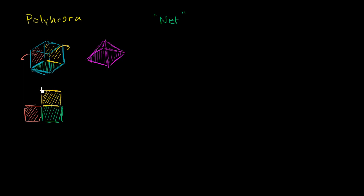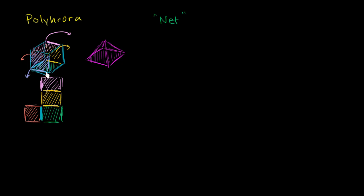Just to be clear, this edge right over here is this edge right over there. Now I have to worry about the top part of the cube — let me do it in a pink color. This top part of the cube is pink and it needs to be attached to one of these sides. Let's attach it to that yellow side, so that when we fold it out — we fold that yellow part back, then we're folding this part back — it would be right over there. And then we could fold this front face out along this edge, and it would go right over there.